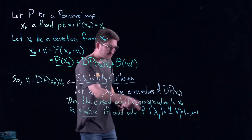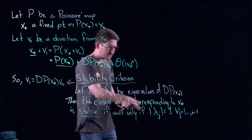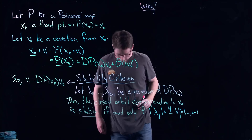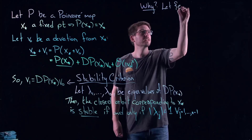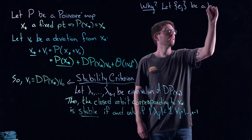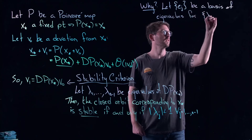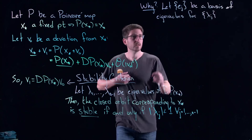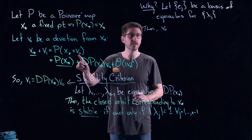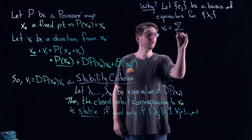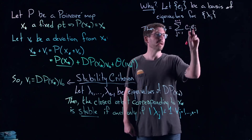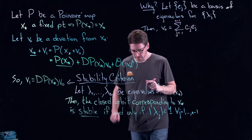Where does this criterion come from? Let the eⱼ be a basis of eigenvectors for the λⱼ. Then I can write my initial deviation v₀ as a superposition along the eigenvectors: v₀ = Σ cⱼ eⱼ. This is just an eigenvector expansion — you may need to review a little linear algebra, but this is the key step.